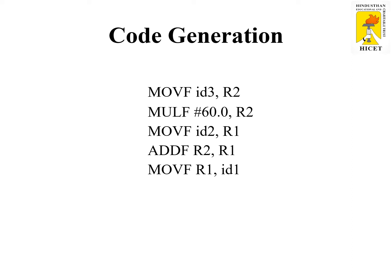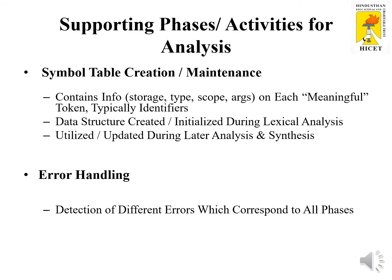Those steps are: lexical analyzing, syntax analyzing, intermediate code representation, code optimization, and finally code generation. The symbol table is a supporting activity for analysis — it stores information such as storage, type, scope, and arguments on each meaningful token, typically identifiers. It is a data structure created and initialized during lexical analysis, and utilized and updated during later analysis and synthesis phases.